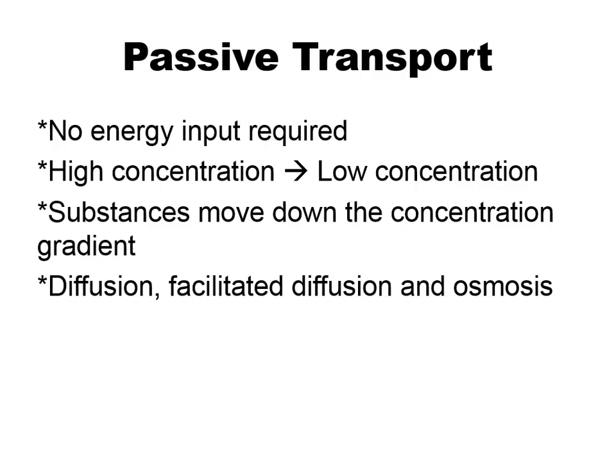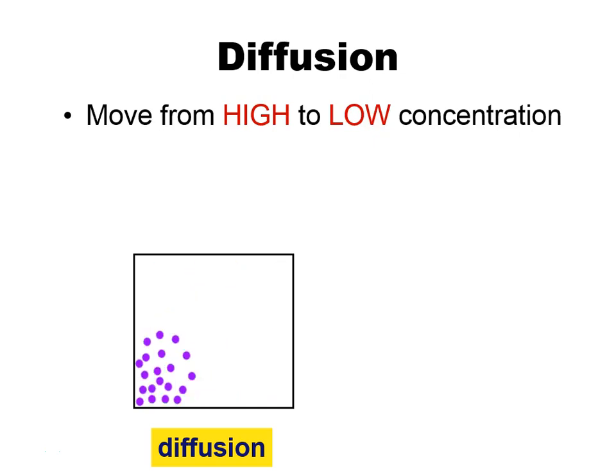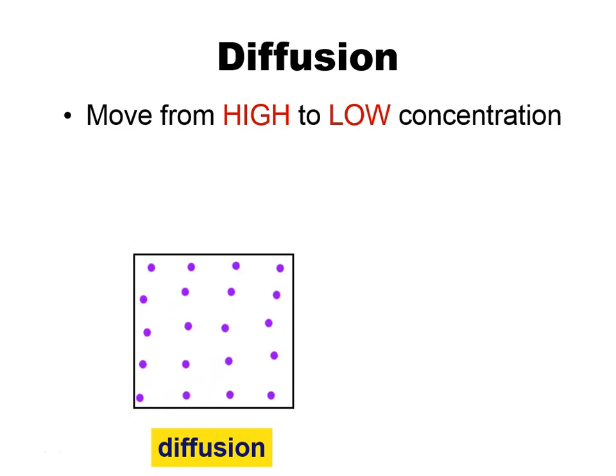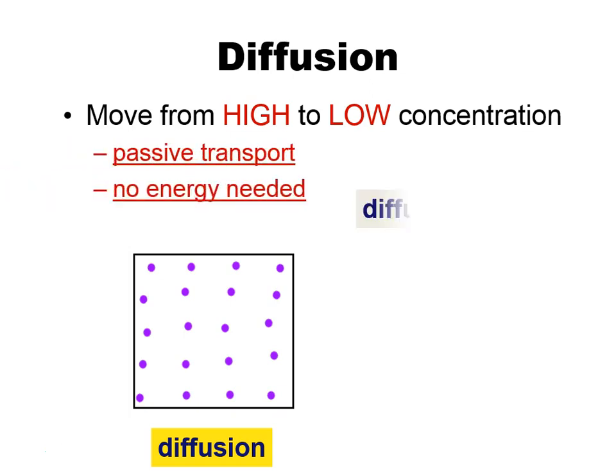So transport — there are two types: active and passive. Starting with passive transport, the big idea is there's no energy required. You're always moving from high concentration to low concentration. There's a concentration gradient — you can think of it like a hill. With passive transport, you're rolling down the hill, and that doesn't require any extra energy. Substances are moving down the concentration gradient from a place where there's a high concentration to an area of lower concentration. There are three basic types: diffusion, facilitated diffusion, and osmosis. Diffusion is just movement from high concentration to low concentration — those molecules are spreading out to fill the space, and it's passive with no energy required.